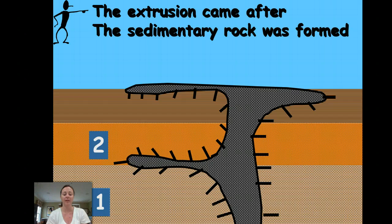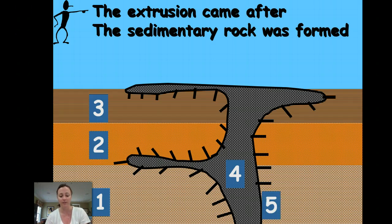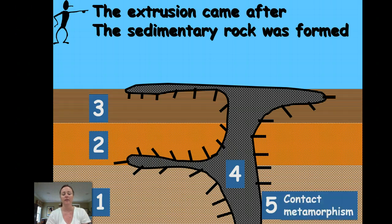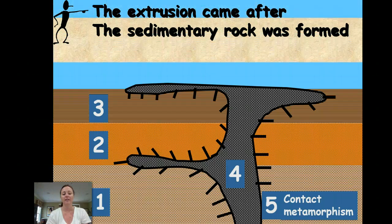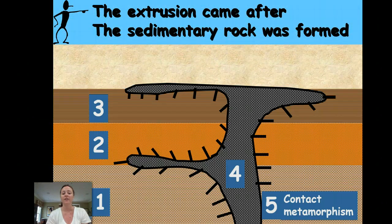The bottom came first, second is the middle layer, third is that striped layer. The fourth event that occurred was this igneous intrusion came up and last the contact metamorphism. Finally, that sixth event occurred, the deposition of that top layer.